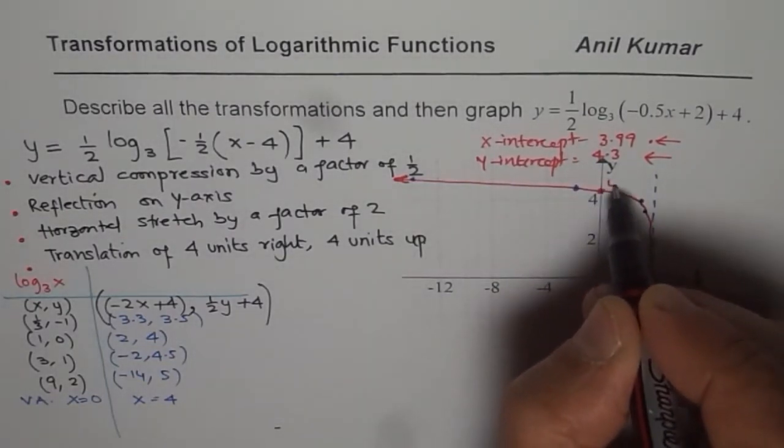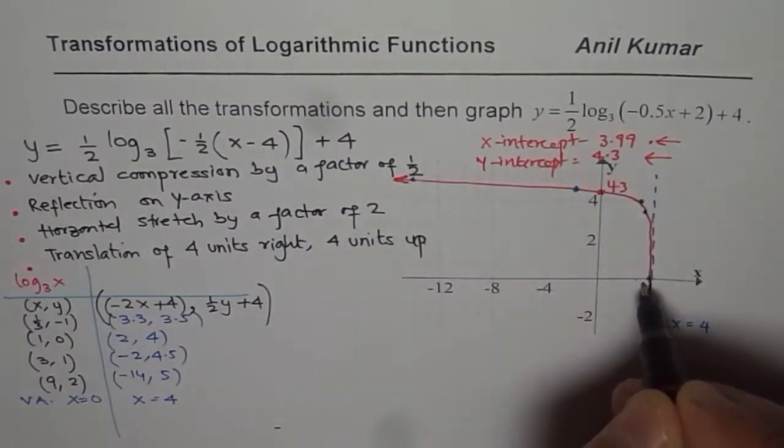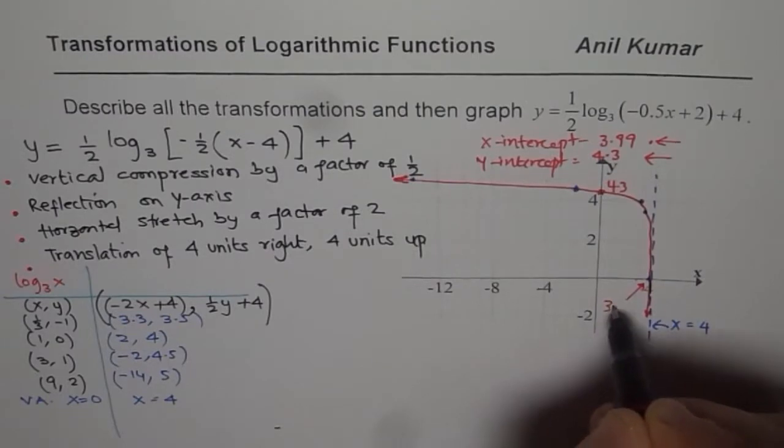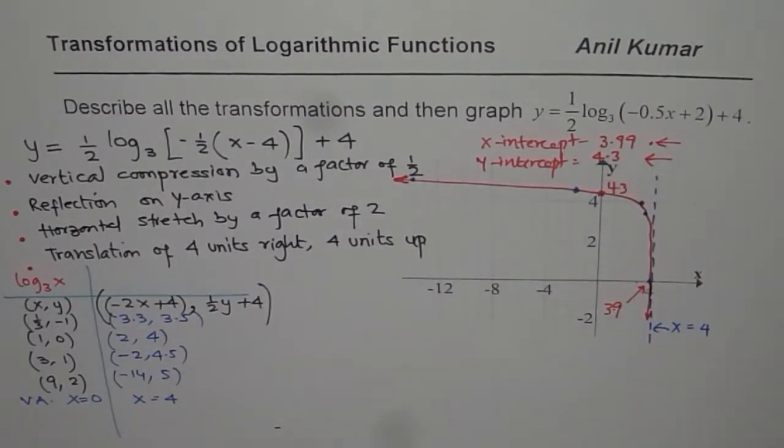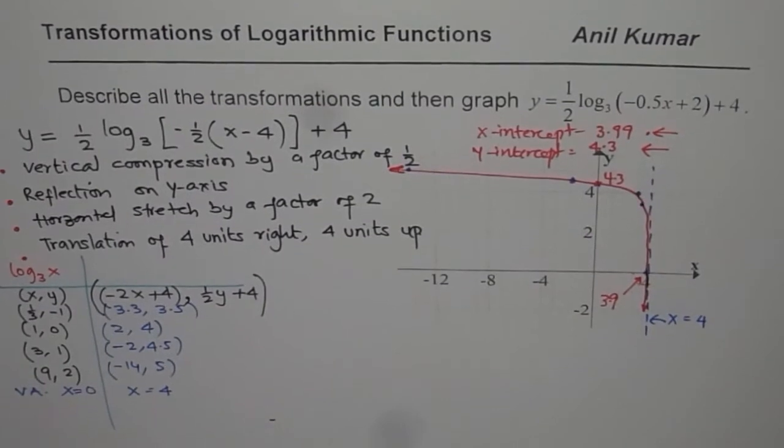So that gives us this point and this point, which is 4.3 here, and that point is 3.9. So that is how you can draw a neat sketch of logarithmic functions. I hope that really helps you to bring everything together.